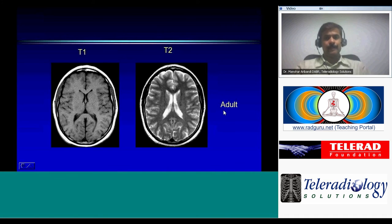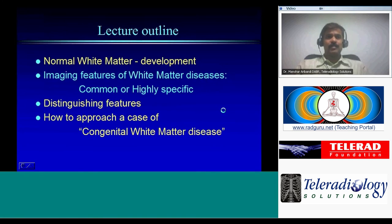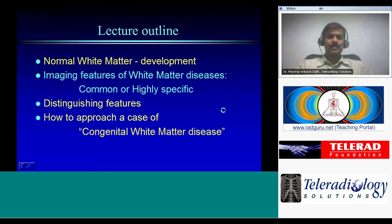If the myelination algorithm is difficult to remember, a good approach is to look at Barkovich's pediatric neuroimaging textbook or any other pediatric neuroimaging reference, which provides age-wise images. You can match the patient's images with the textbook to diagnose whether myelination is proceeding normally or is delayed — that's the first step.